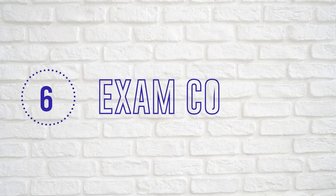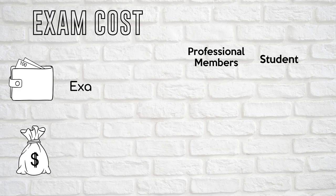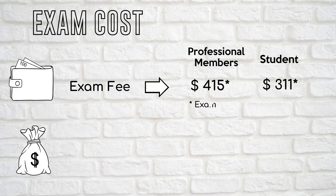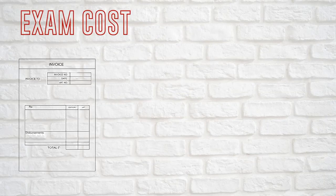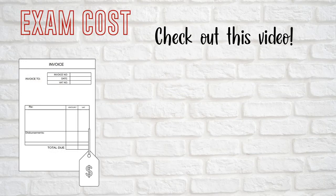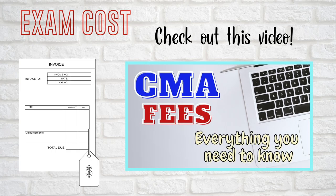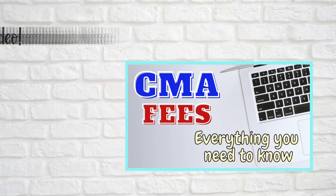Now let's talk about the exam cost. The exam fee is different for professionals and students. For professionals, you have to pay $415. For students, you only have to pay $311. However, please note that before you're able to register, you have to pay first for the IMA membership and the CMA entrance fee. If you want to know about the IMA fees as well as the CMA cost in total including Part 1 and Part 2, check out the linked video in the description box below.